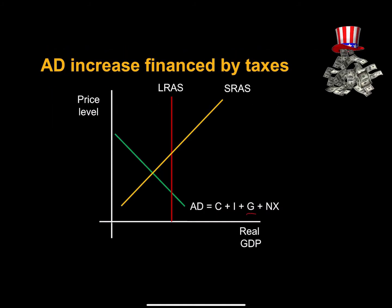Suppose we increase government purchases with the objective of increasing aggregate demand. Unfortunately, that increase in aggregate demand has to be eventually financed by higher taxes. An increase in taxes reduces labor supply and labor input, so we get a reduction in economic activity, and in the long run we have a lower level of potential GDP.